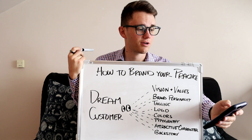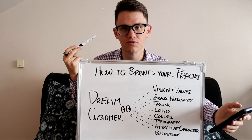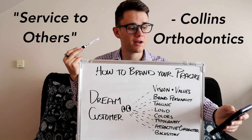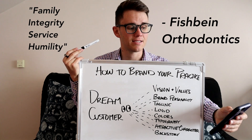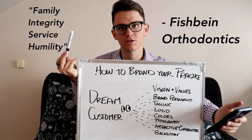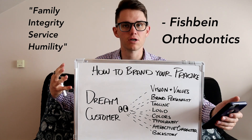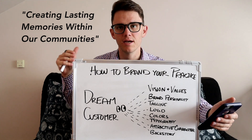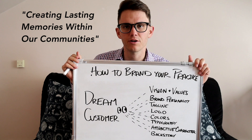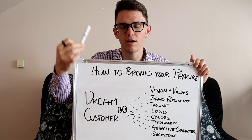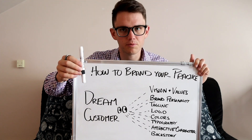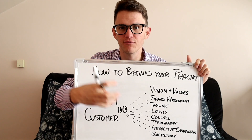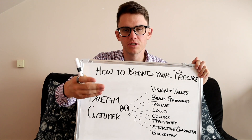Here are some examples of good orthodontic practice vision and values. Dr. Grant Collins at Rochester Orthodontics — his is 'service to others.' Fishbine Orthodontics has family, integrity, service, and humility — which spells FISH — as their four points of focus. And a third example is 'creating lasting memories within our communities.' All of these provide a concentrated area where your team and practice can focus to create a good experience for customers.